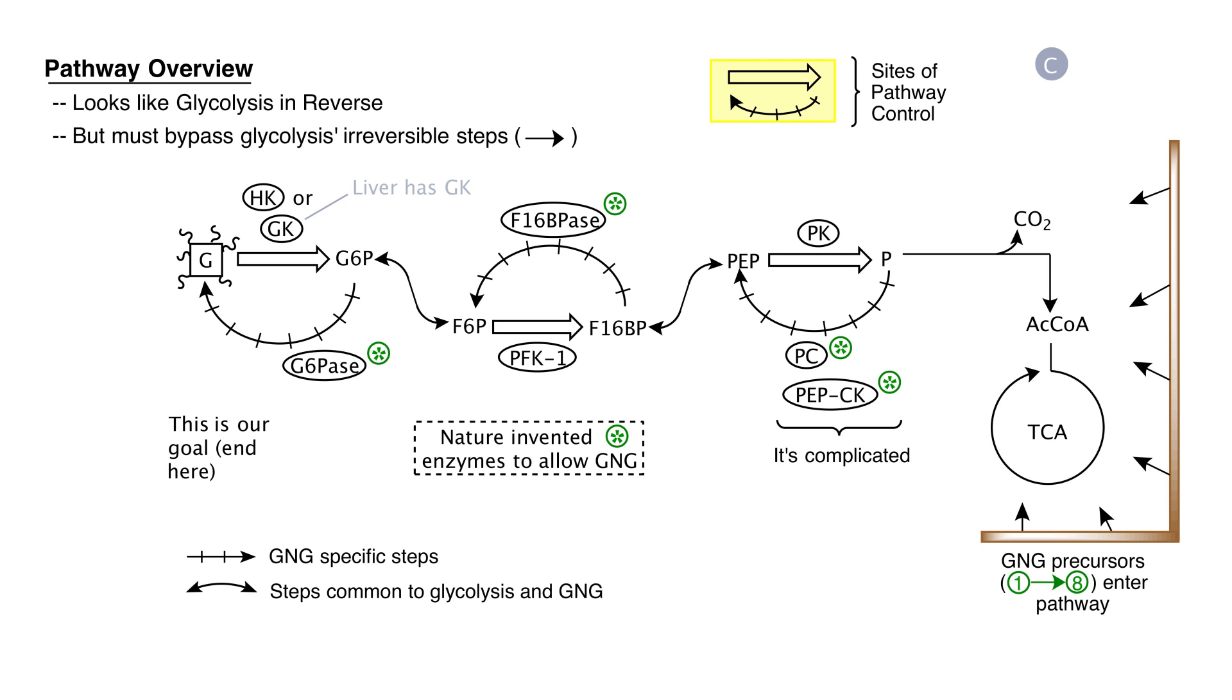As we learned earlier, there are ten steps in glycolysis going from glucose to pyruvate. Three of those steps are thermodynamically irreversible. Those are the steps that commit molecules to flow from left to right. The thermodynamically irreversible steps of glycolysis are, first, hexokinase slash glucokinase, the conversion of glucose to glucose 6-phosphate. The second irreversible step is phosphofructokinase 1, the conversion of fructose 6-phosphate to fructose 1-6-bisphosphate. The third irreversible step is pyruvate kinase, the conversion of phosphoenolpyruvate to pyruvate.